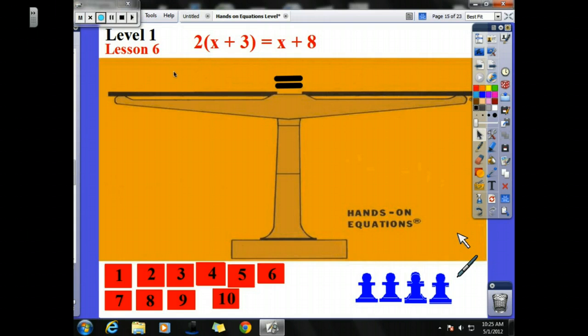The easiest way to explain parentheses in this equation is what they're saying is I have an x plus 3. So I go get an x, and I go get a 3. There's my x plus 3.